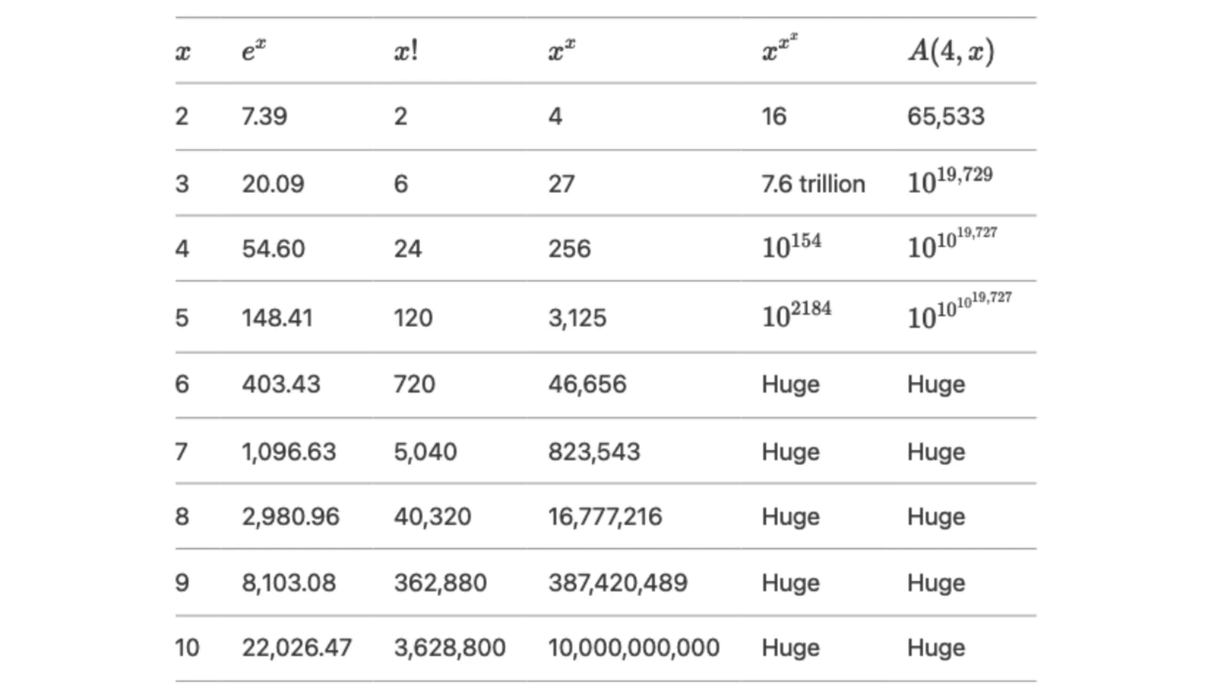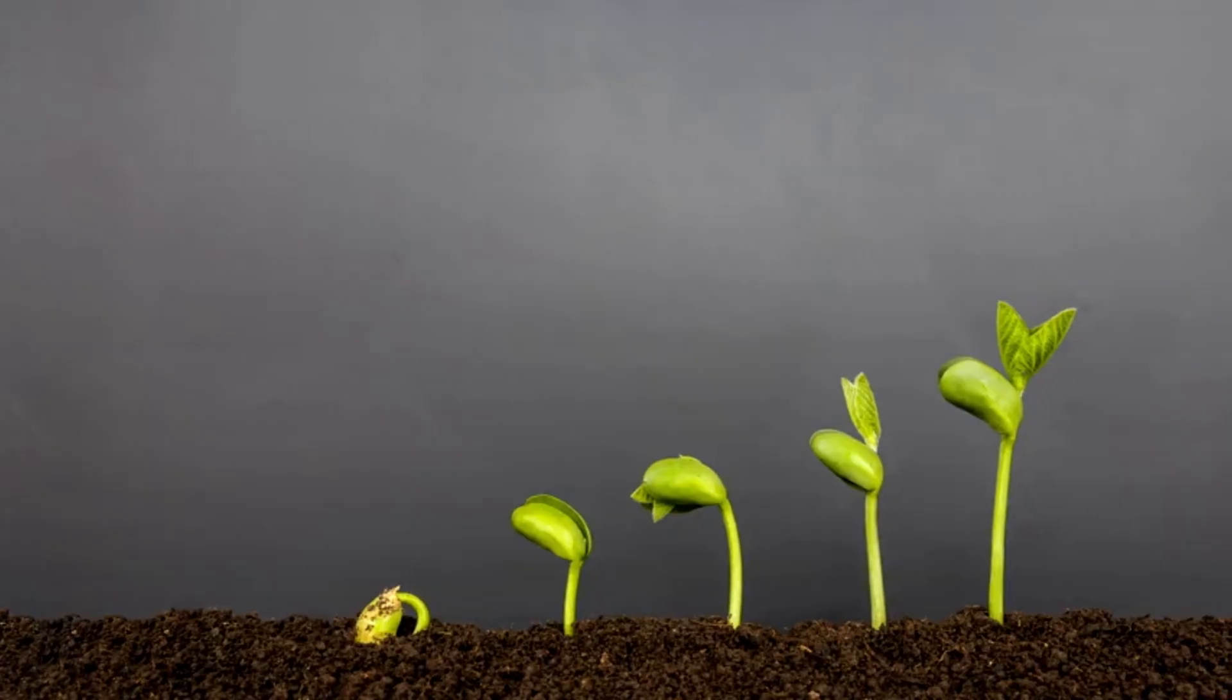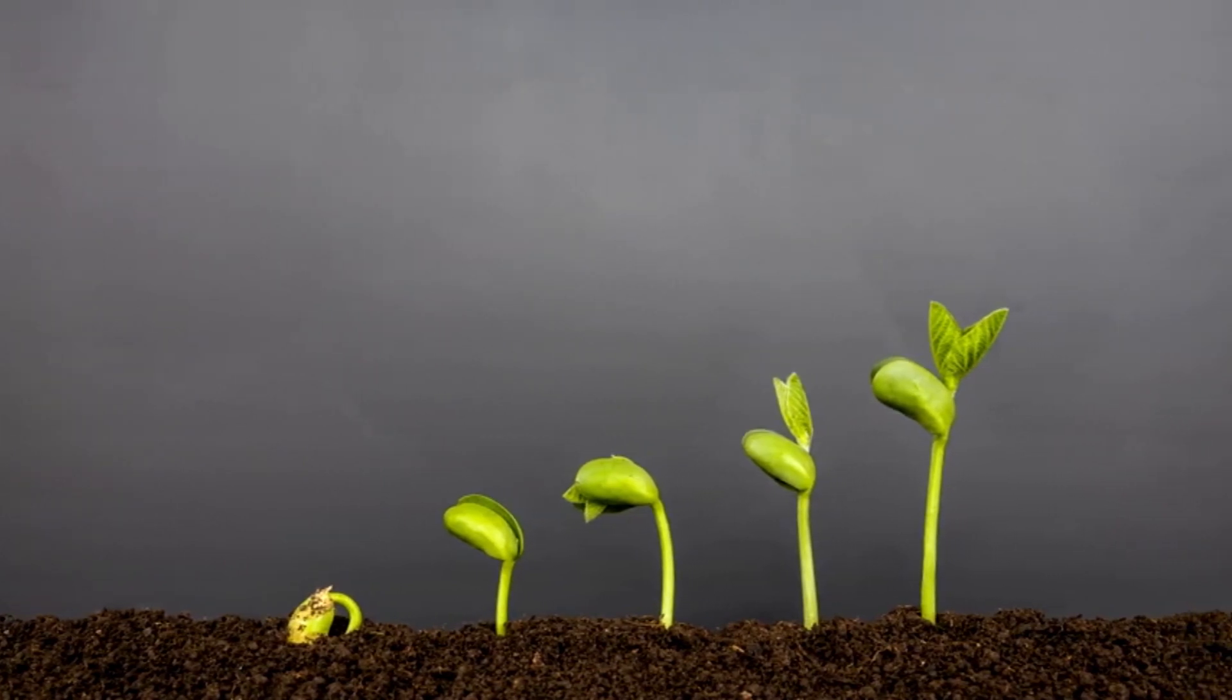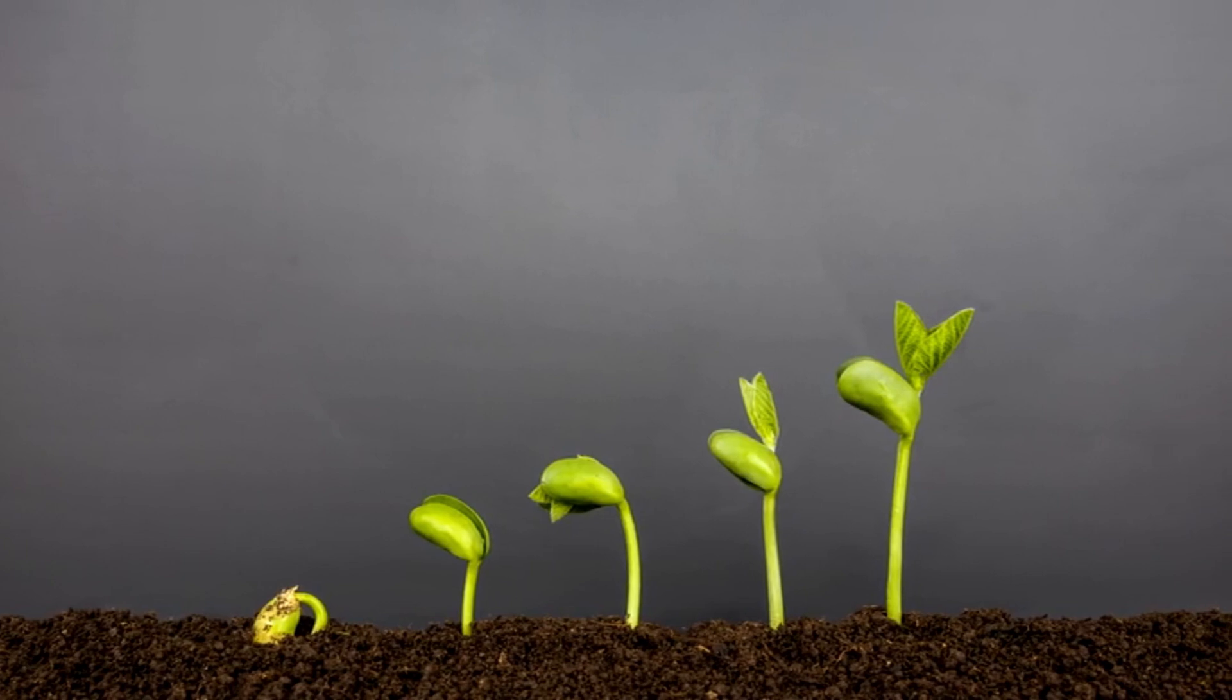From exponential growth to the mind-boggling Ackermann function, the hierarchy of rapidly growing functions reveals the incredible diversity of mathematical behavior. While exponential functions are already fast, factorial, tetration, and Ackermann function push the boundaries of what we can compute and comprehend. These functions remind us that mathematics is not just about numbers. It's about exploring the infinite possibilities of growth and complexity.